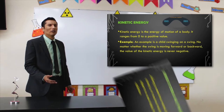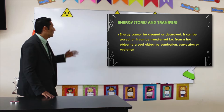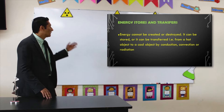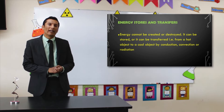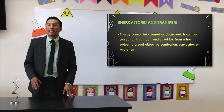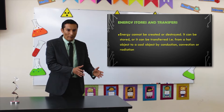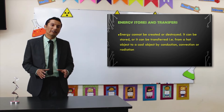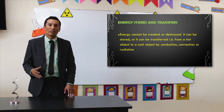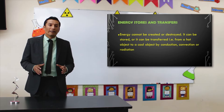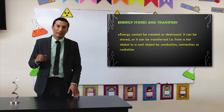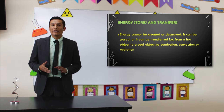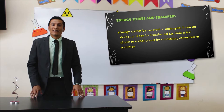Energy cannot be created or destroyed — it can be stored or transferred. For example, energy moves from a hot object to a cooler object by conduction, convection, or radiation. We have seen these five types of energy, and now I would like to explain the transfer of energy, which will be demonstrated through an experiment. Follow me so you can see how energy can be transferred from one object to another.